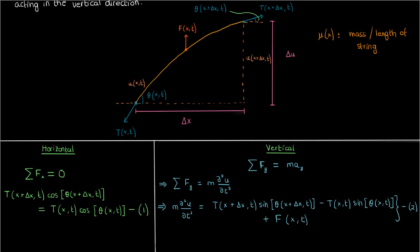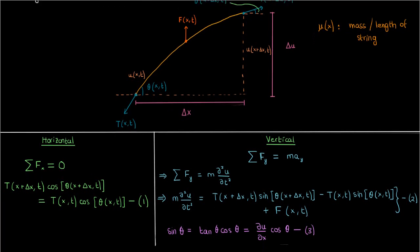We can re-express sine of the angle theta as the tangent of theta times cosine theta. Now the tangent of the angle theta is just the slope of the string at that exact location, so we can say that sine theta is just the slope partial u / partial x, times the cosine of the angle theta.